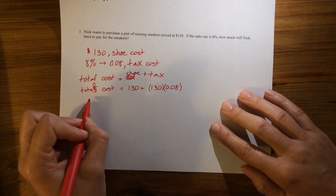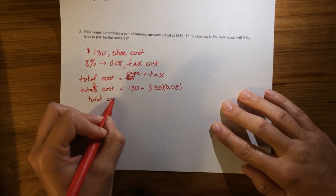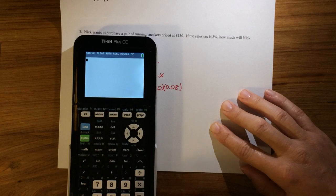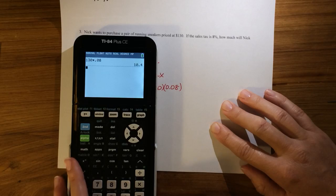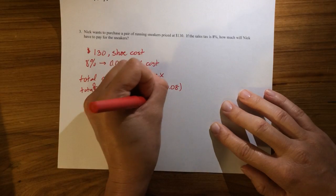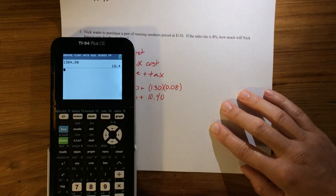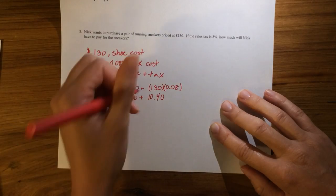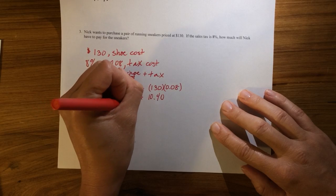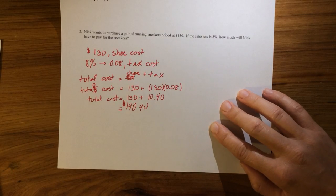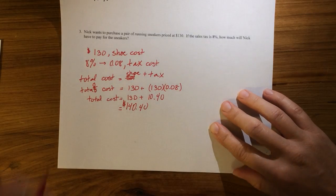So, our total cost is equal to 130 plus, I'm going to grab my handy dandy calculator, 130 times 0.8 is equal to 10.4, or $10.40. So, the total cost of the shoe is 130 plus 10.4, is $140.40. So that's the total cost for the shoes. So this is one way to do it, so I'm going to call it version one.